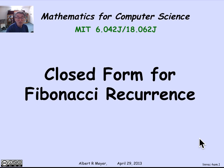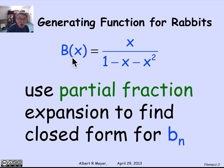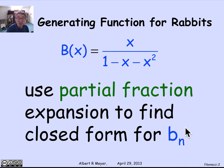Now we're set up to find a closed form for the number of rabbit pairs we have at month n that solves the Fibonacci linear recurrence. We derived the generating function for the rabbit numbers b_n as x over 1 minus x minus x squared. We're going to use the method of partial fractions to extract the coefficients and find a nice closed form expression for b_n, which will also give us a much more efficient way to compute b_n than simply repeatedly executing the recurrence.